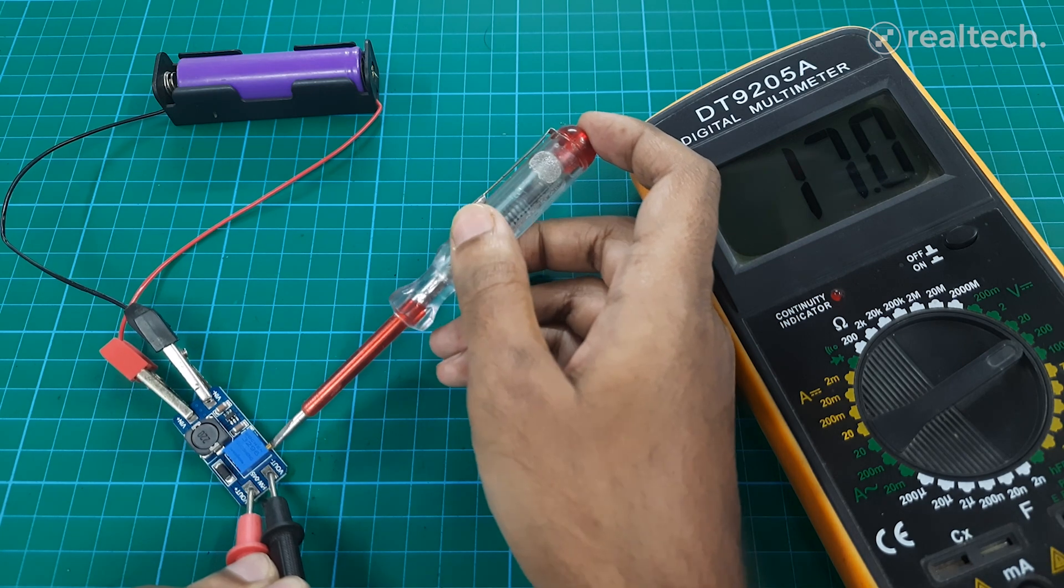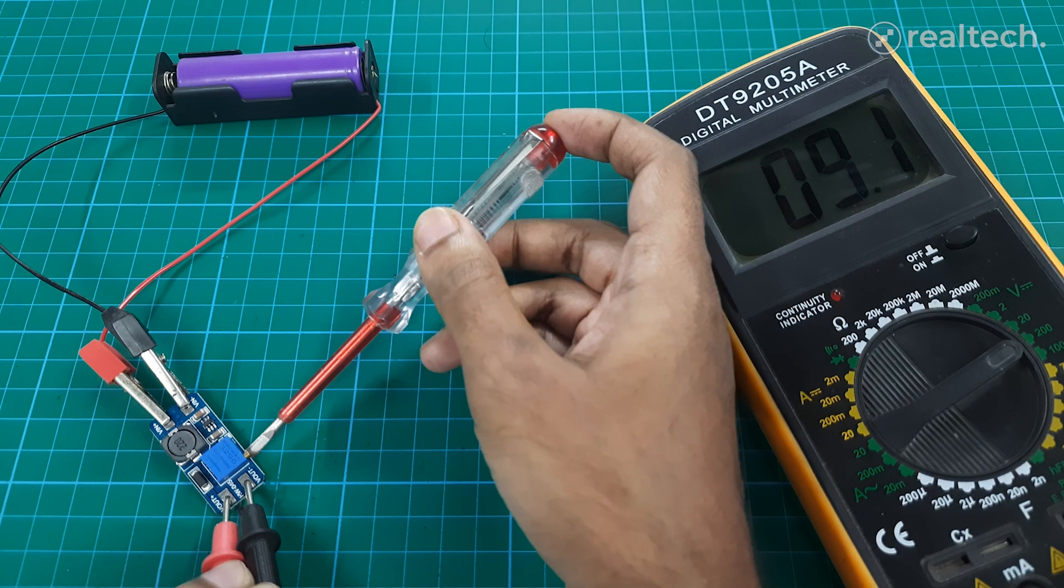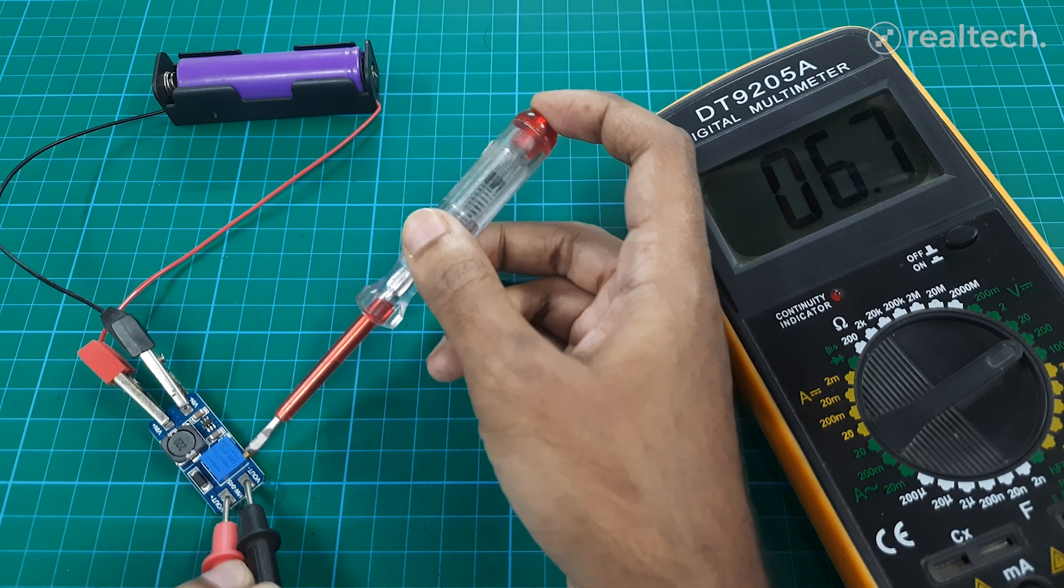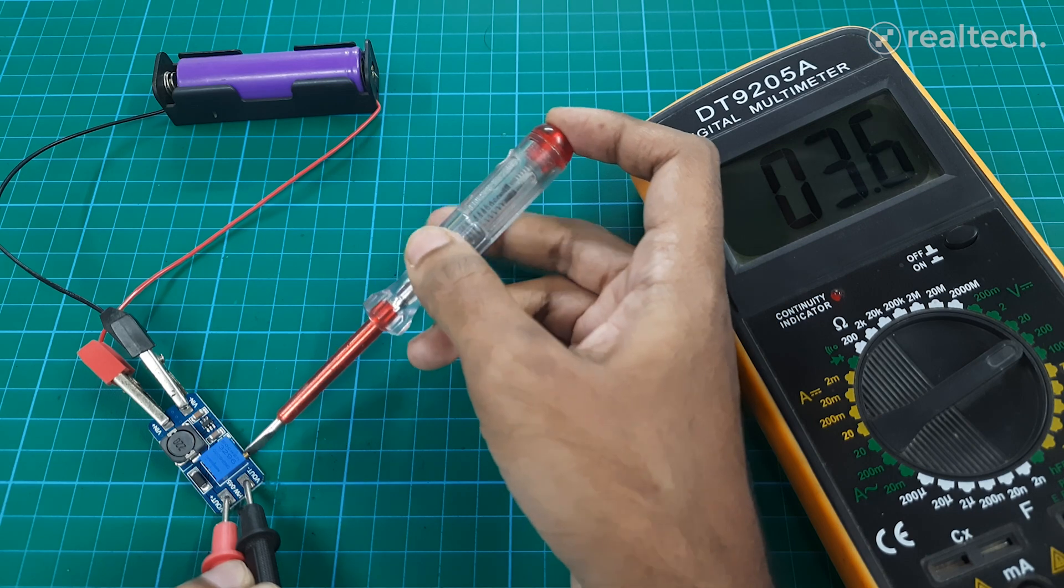The MT3608 is a compact DC to DC step-up boost converter module that efficiently increases low input voltages from 2 to 24 volts to higher output voltages, adjustable up to 28 volts.